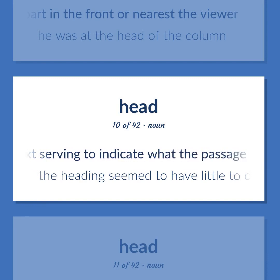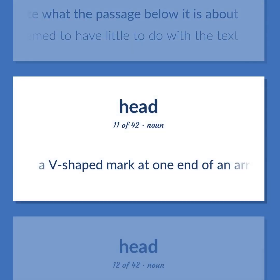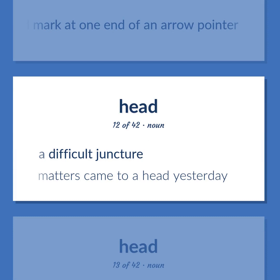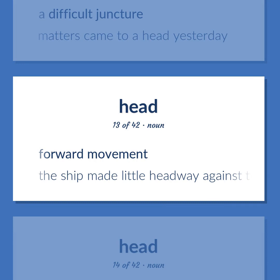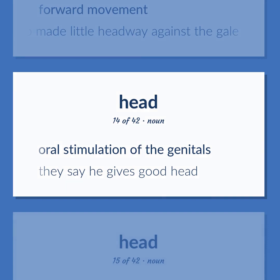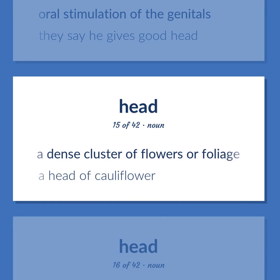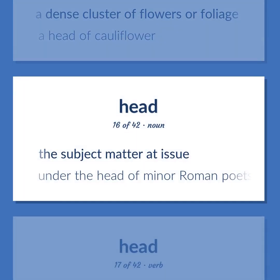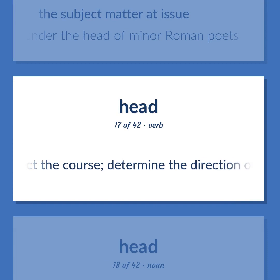A line of text serving to indicate what the passage below it is about. The heading seemed to have little to do with the text. A V-shaped mark at one end of an arrow pointer. A difficult juncture. Matters came to a head yesterday. Forward movement. The ship made little headway against the gale. Oral stimulation of the genitals. They say he gives good head. A dense cluster of flowers or foliage. A head of cauliflower. The subject matter at issue. Under the head of minor Roman poets. Direct the course; determine the direction of traveling.